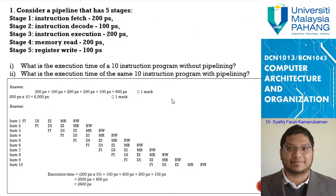So we go towards question number one: how do you calculate execution time of a program with pipelining and without pipelining? Without pipelining, one instruction is the total of all stage times in picoseconds. From stage one until stage five, you add all of them together and get 800 picoseconds per instruction. With 10 instructions, that's 800 times 10, which is 8000 picoseconds.